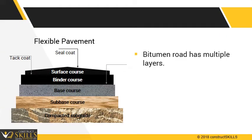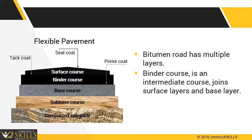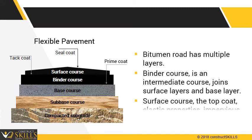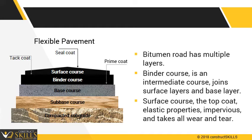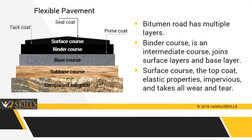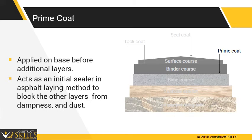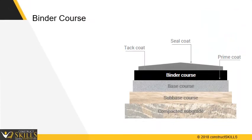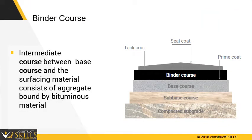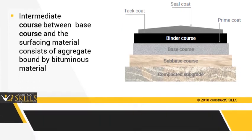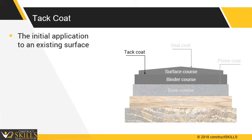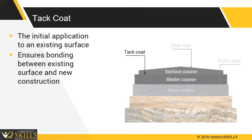Bitumen road is constructed in multiple layers. The binder course is an intermediate course which joins the surface layer and the base layer. The surface course, also called the top layer, has elastic properties, is impervious, and takes all wear and tear of traffic. Prime coat is a coating applied directly to a prepared base course; it acts as an initial sealer in the asphalt laying process to block other layers from moisture, dust, and debris, and bonds the base course to the binder course. The binder course consists of intermediate-size crushed stones bound by bituminous material, helping load distribution to the base course. Tack coat is a very light application of a binder to an existing surface to ensure bond between the existing surface and new construction; the material is liquid, can be spread uniformly, and sets quickly.